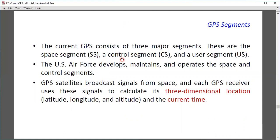The current GPS consists of three major segments: space segment, control segment, and user segment. The US Air Force develops, maintains, and operates the space and control segments. Because it is the US Global Positioning System, it is controlled by the US Air Force.